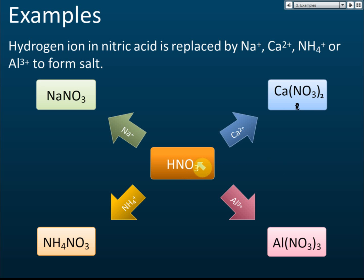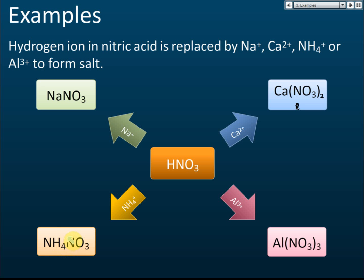If the hydrogen is replaced by an aluminium ion, it becomes aluminium nitrate, Al(NO₃)₃ — also a salt. If it is replaced by ammonium, NH₄⁺, it becomes ammonium nitrate, and this is also a salt.